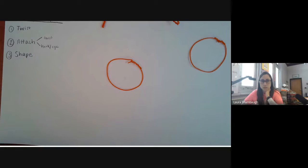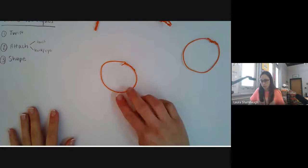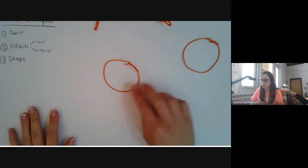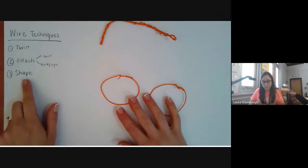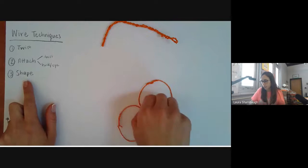Those are two different ways of attaching. You also have some wire and some clear tape in your art kit which can be used to help you with that as well. The third technique is creating different shapes.